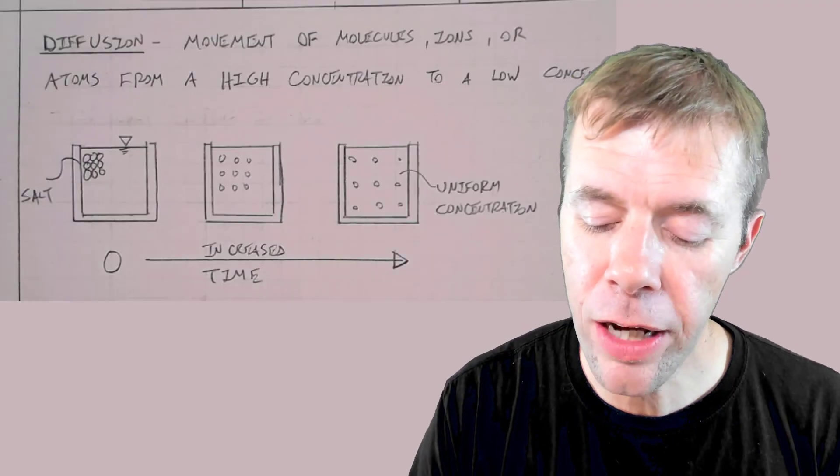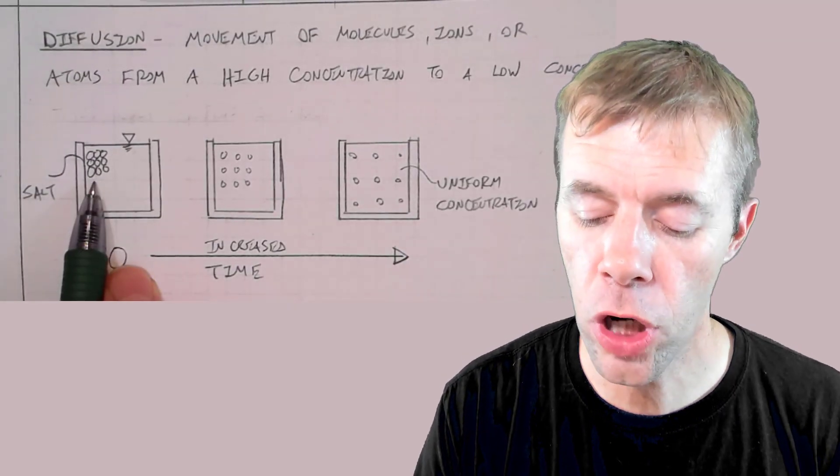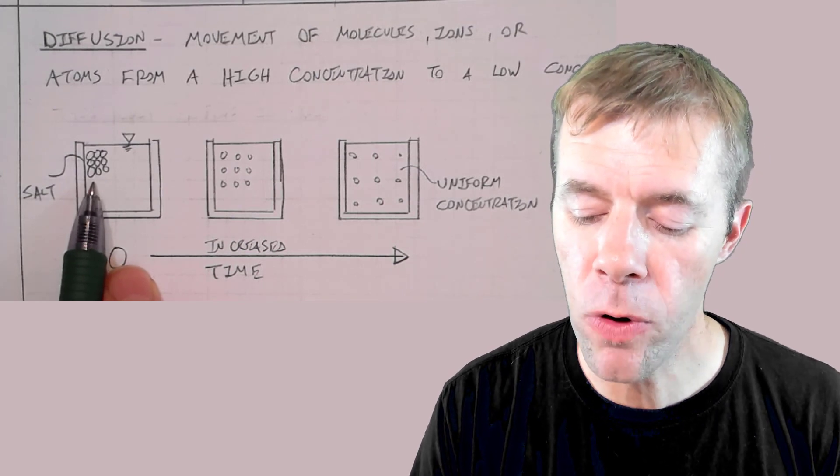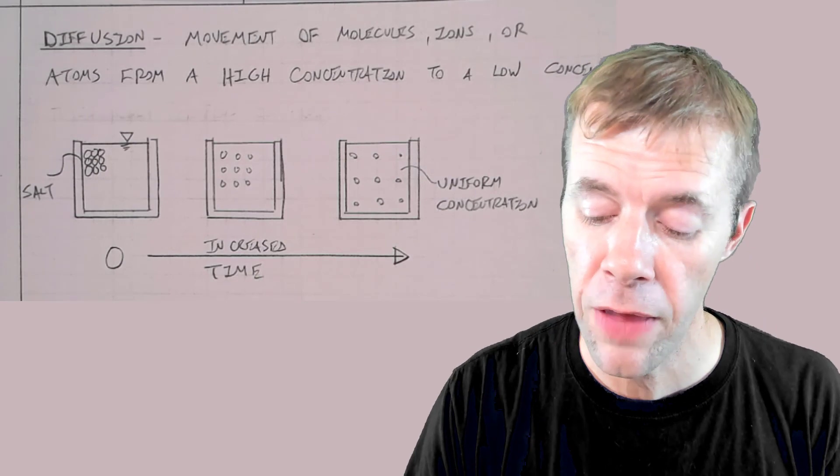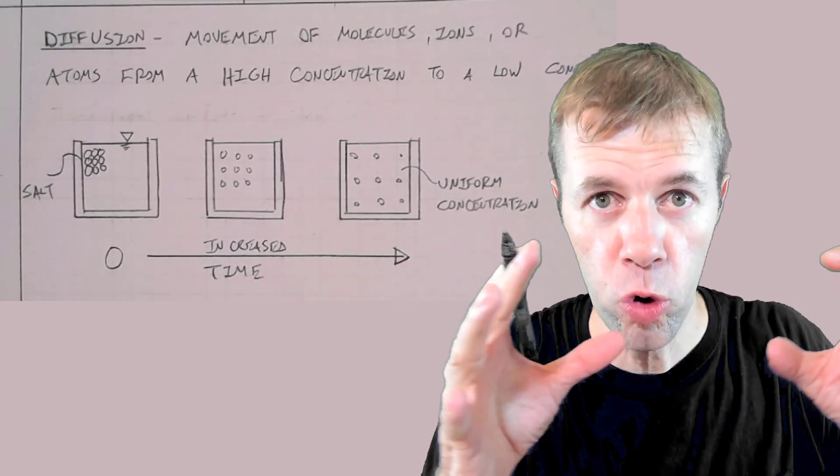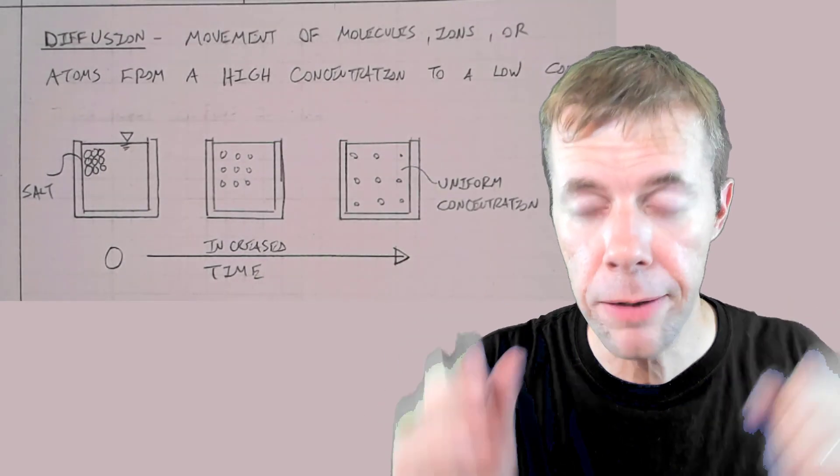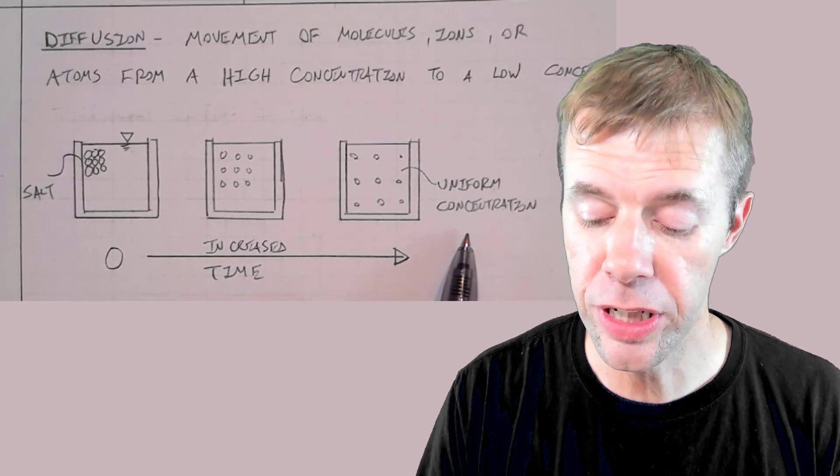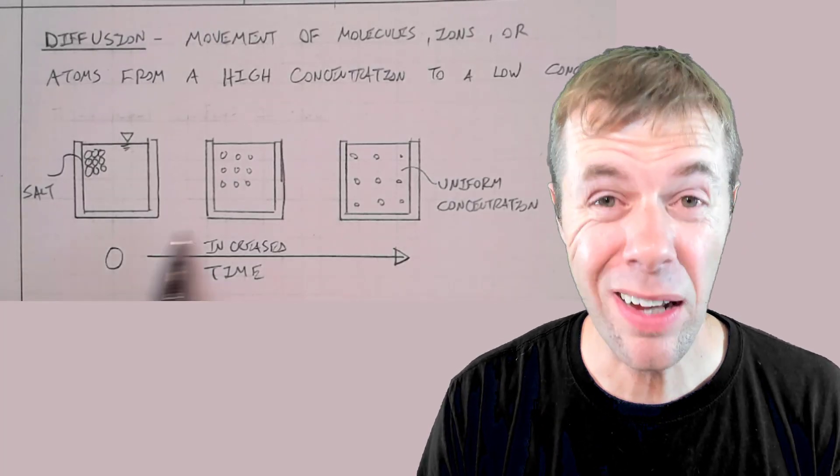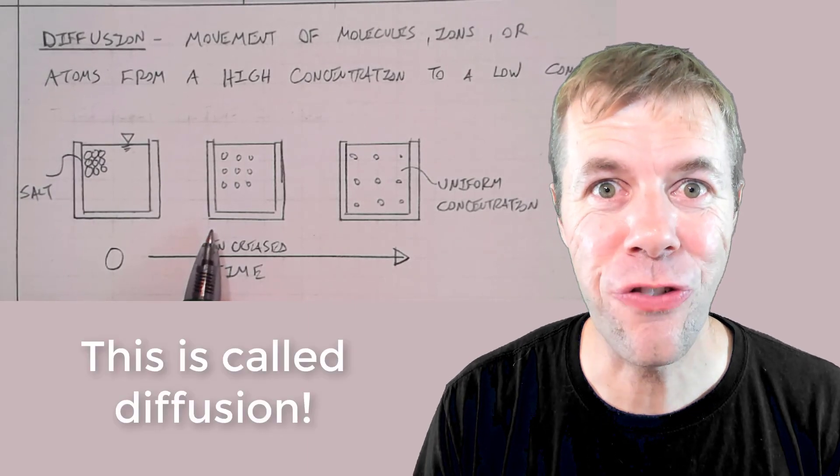Let me show you what I mean. Let's say I have a cup of water and I throw in some salt, a chunk of salt. Over time those salt molecules are actually going to move a little bit further away, then over more time they're going to move even further away until they're somewhat of a uniform concentration. And this process is called diffusion.